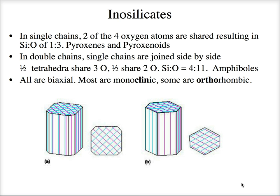All inosilicates are biaxial, and most of them are going to be monoclinic; there are a few orthorhombic ones. Over on the left we have a classic pyroxene — when you look at a section cut parallel to 001, straight down the c-axis, we see cleavage that's almost 90 degrees. Over in the amphibole we see the same kind of section — cleavages at 124 and 56 degrees, actually 83 and 97, so not quite 90.